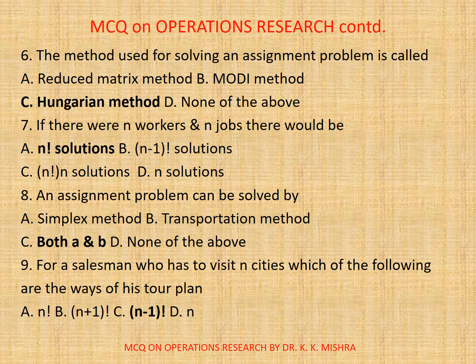Question 7. If there were N workers and N jobs, there would be factorial N solutions. Question 8. An assignment problem can be solved by: A. Simplex method. B. Transportation method. C. Both A and B. As mentioned above, the correct option is C: Both A and B.